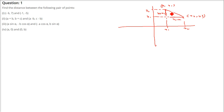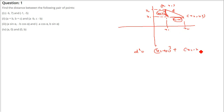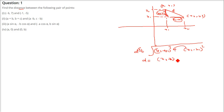So what will be this distance? If this is 90 degrees, we can use the Pythagoras theorem. So distance squared will be equal to (y2 minus y1) whole square plus (x2 minus x1) whole square. Now take the root. So the distance will be the square root of (x2 minus x1) whole square plus (y2 minus y1) whole square. So we will follow the same thing.